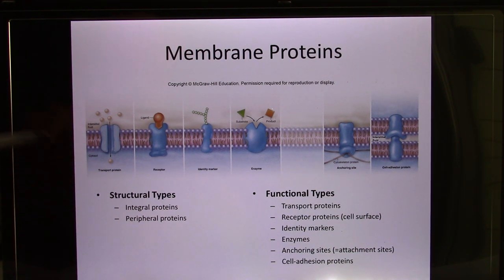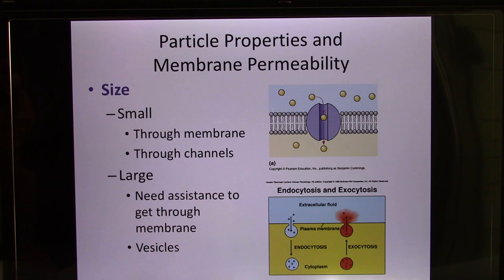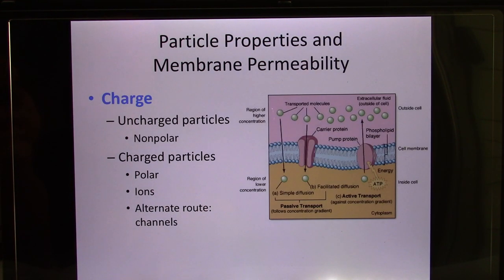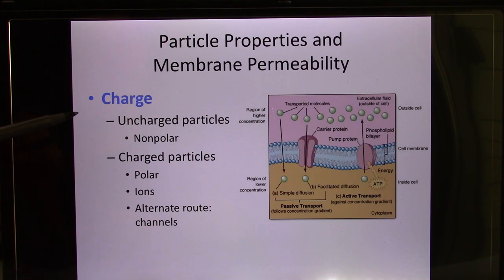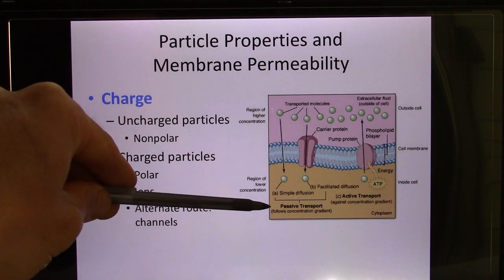Today we're mainly going to talk about what decides permeability — what molecule can go through and what cannot. The first factor is size. Smaller molecules can go through the cell membrane; bigger ones cannot. The second factor is charge. Your cell membrane prefers uncharged particles. So if it's a charged particle — like ions — even though they are small, they cannot go through the cell membrane and need a helper, like an ion channel.